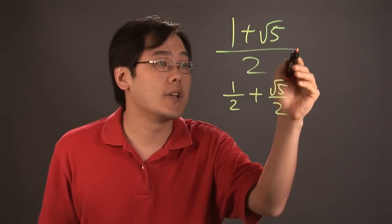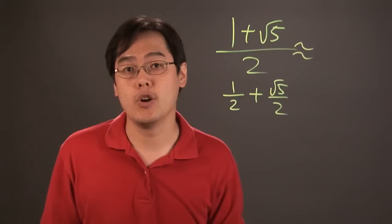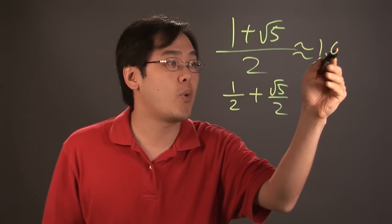Now the other thing that you can consider is to approximate the golden ratio. It's a number that's very close to 1.618.